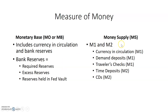The money supply is made up of M1 and M2. M1 would be money that's in circulation, just like with the monetary base. You also have your demand deposits, also known as your checking deposits. Traveler's checks are part of M1, and then part of M2 would be time deposits, which would be your savings account and CDs — certificates of deposits.